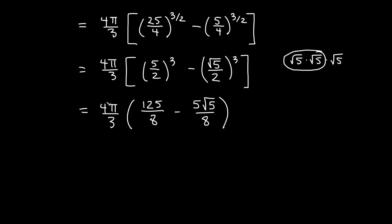Okay so next I'll reduce my four with my eights. The four becomes one and these become two, both on the bottom there. So this is π. If I take three times two, that gives me six on the bottom. So π over six times the quantity 125 minus five root five.